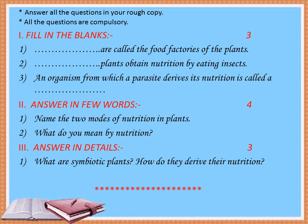Now move to question number 3: answer in detail. This is the long answer type question, consisting of 3 marks. The first question is: what are symbiotic plants? How do they derive their nutrition?